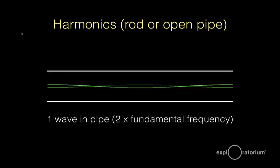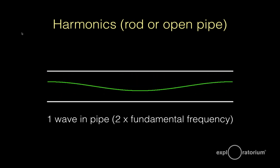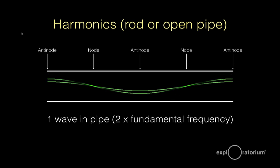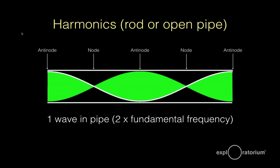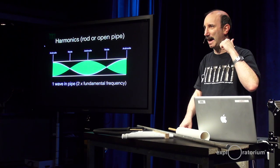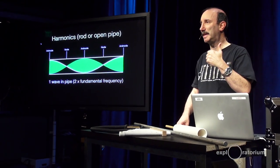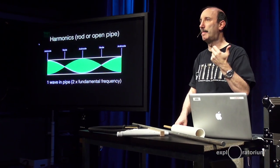Here's the next step up. Again, both ends must be anti-nodes because the ends are open and it's free to vibrate there. So here we have anti-nodes at both ends, an anti-node in the middle as well, and two nodes in the middle — places where it's not actually moving. Here we have one complete wave in the pipe. We started with half a wave, and now we've moved up to one wave — that's double the frequency. So the next harmonic of an open pipe is double the lowest, or fundamental, frequency. So an open pipe is different than a closed pipe — the closed pipe went one, three, five.